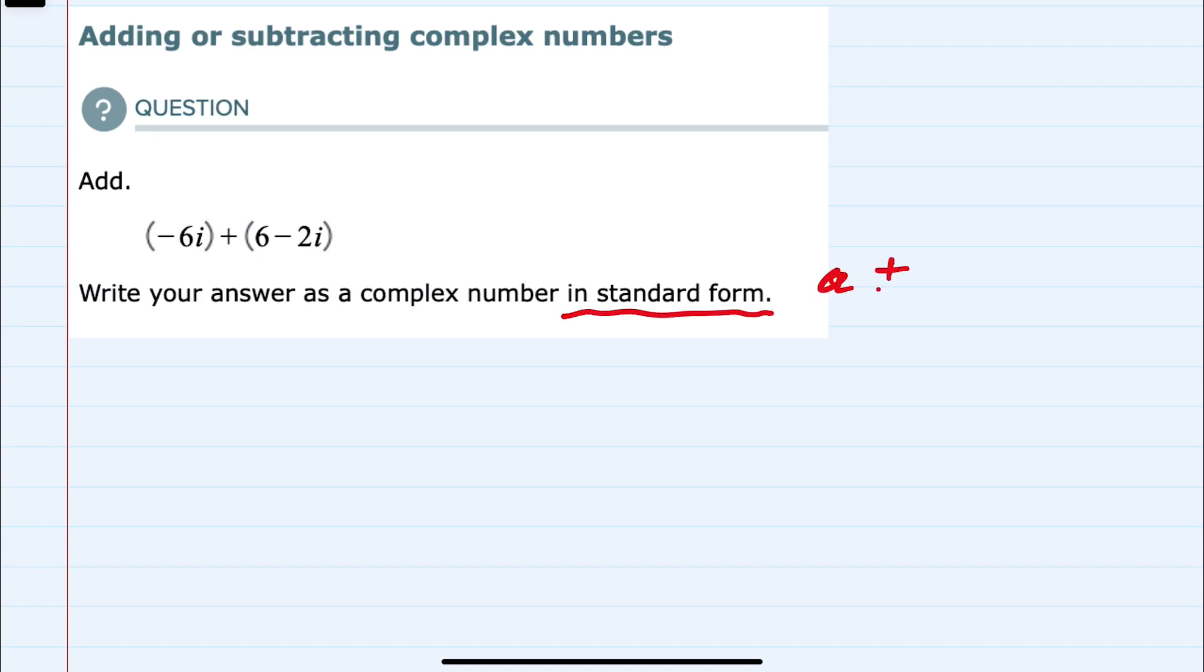Standard form being A plus or minus Bi. We can add complex numbers by combining the whole number part of the complex number and then adding the irrational part of the complex number. In this example,